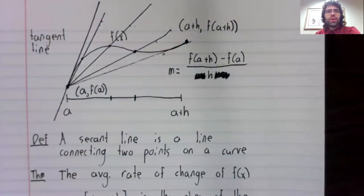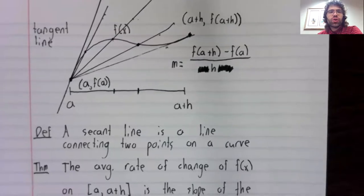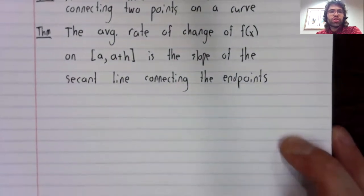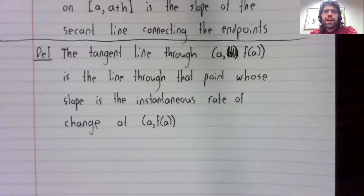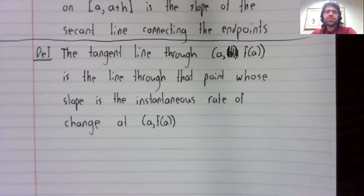And what the tangent line is in terms of rates of change: the tangent line through a point is the line through that point whose slope is the instantaneous rate of change at that point.